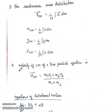Fourth formula is velocity of center of mass of a two-particle system. V center of mass equals M1V1 plus M2V2 upon M1 plus M2.